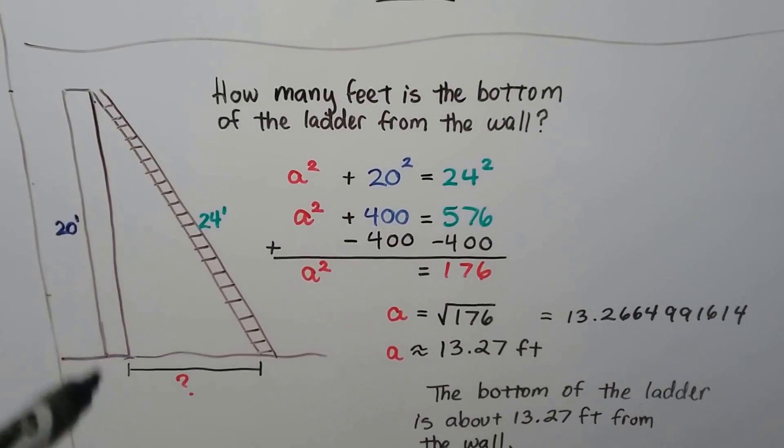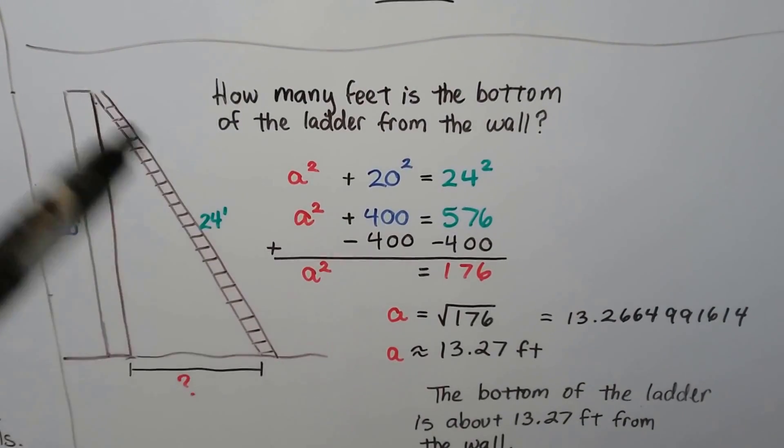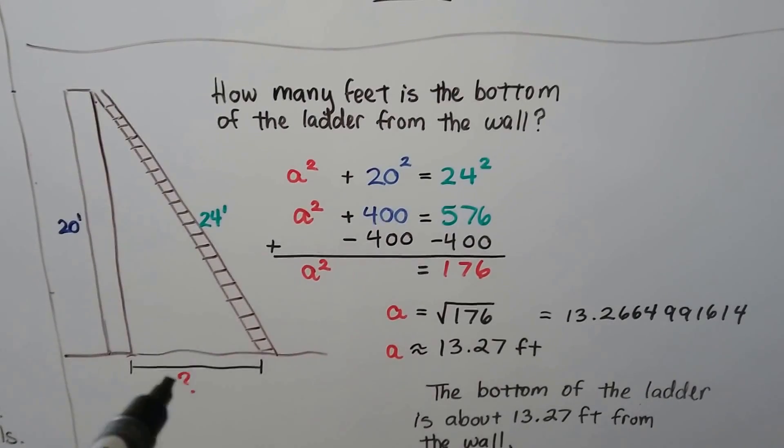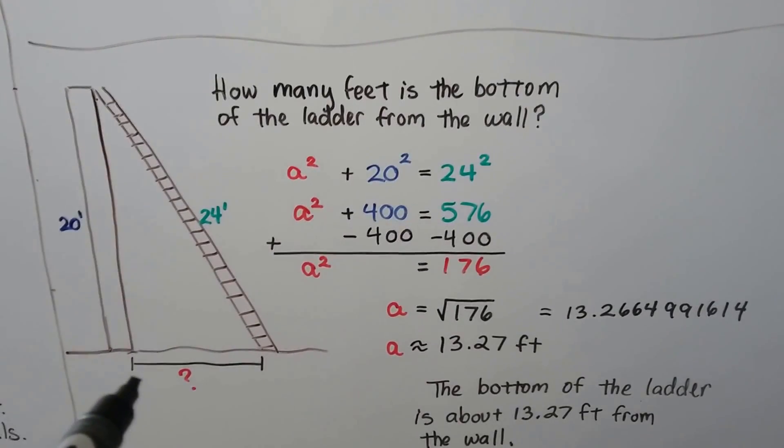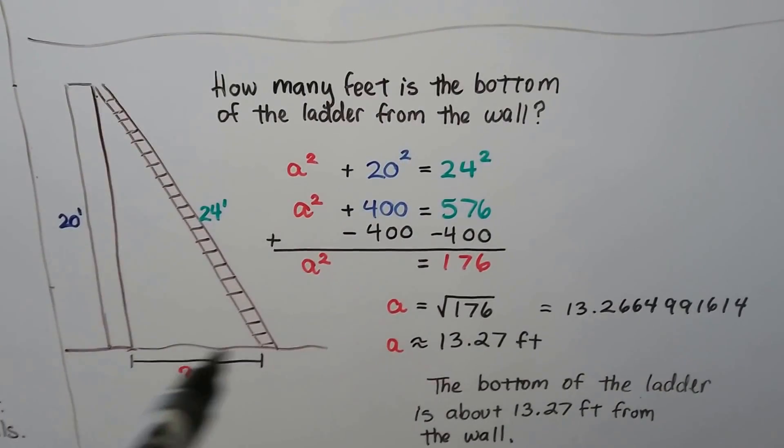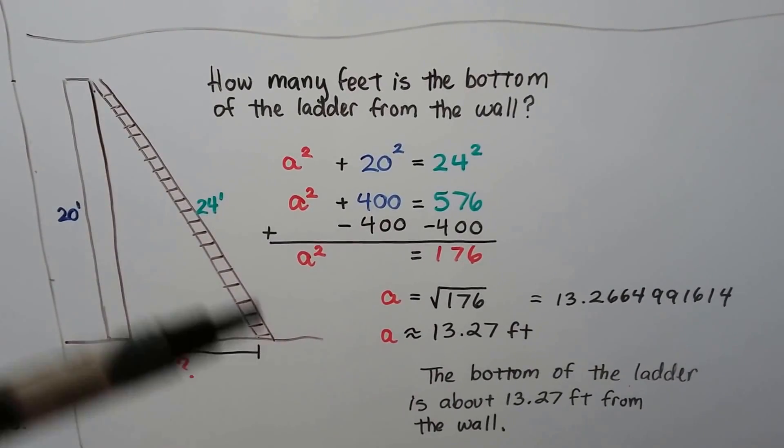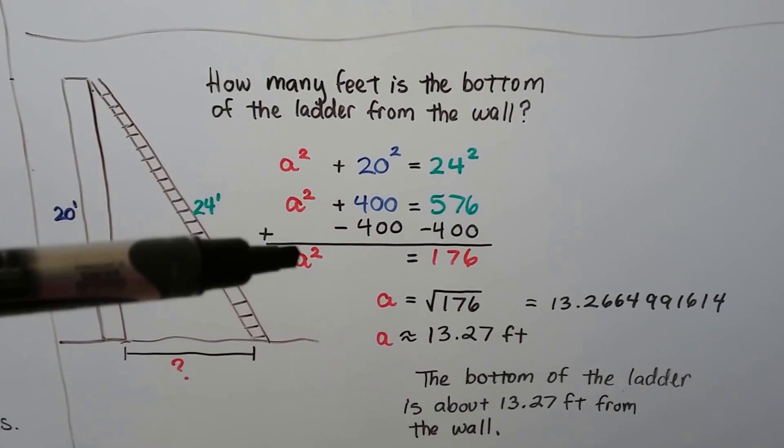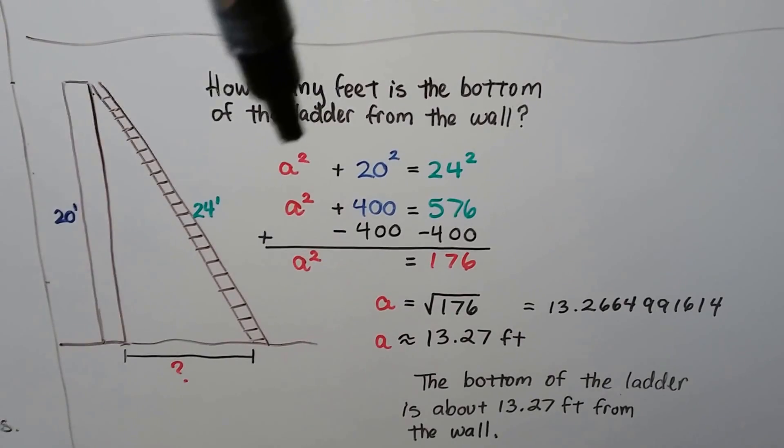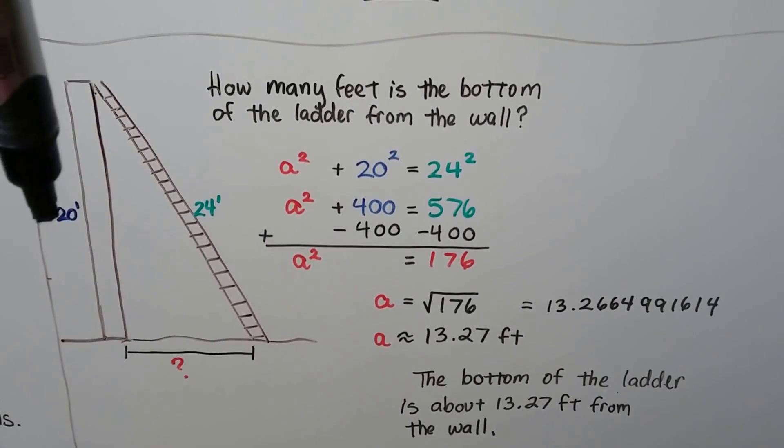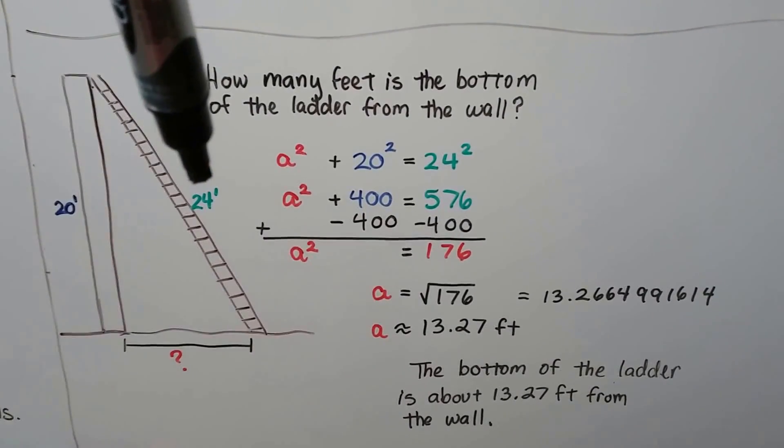Now, here we have a wall that's 20 feet tall. We have a ladder that's 24 feet long, but we don't have this right here. How many feet is the bottom of the ladder from the wall? So, again, we can try to find a squared. So, a squared plus 20 squared will equal 24 squared.